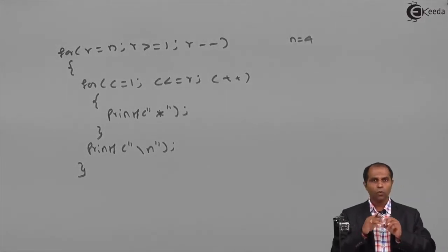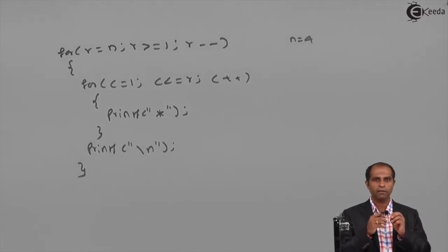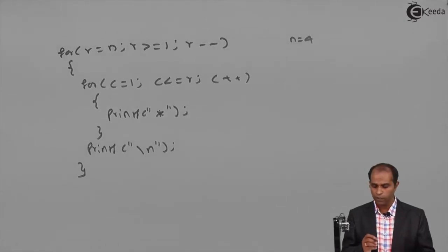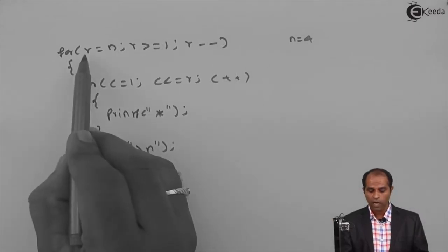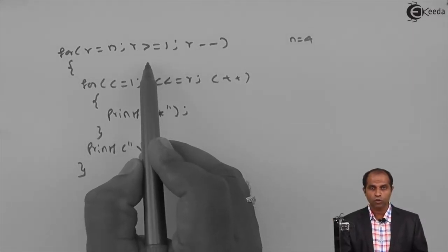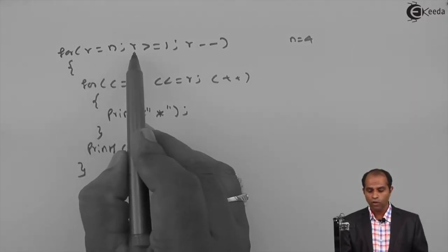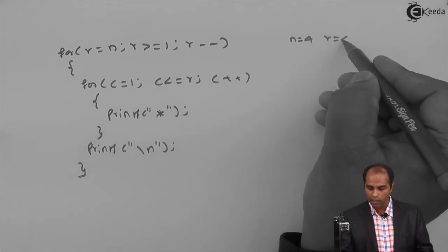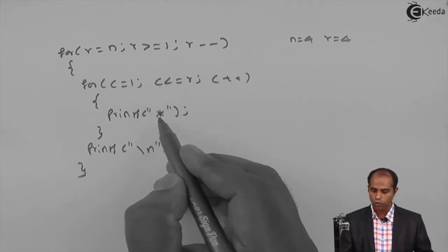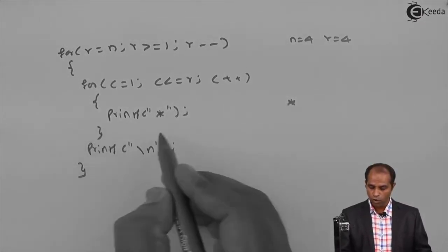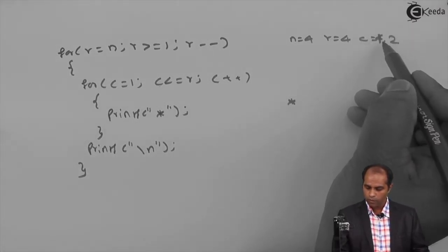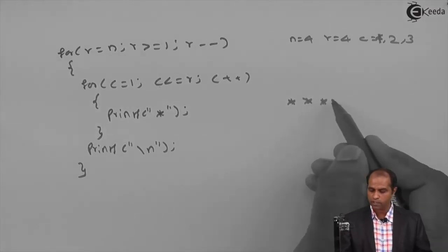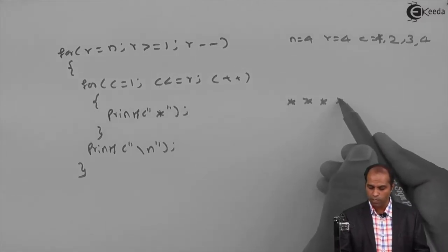Let's virtually execute this for N equals 4. R is set to 4; 4 greater than equals 1 is true. C starts at 1; 1 less than equals 4 is true — print asterisk. C becomes 2, true — print asterisk. C becomes 3, true — print asterisk. C becomes 4, true — print asterisk. C becomes 5, stop. So four asterisks are printed for the first row.